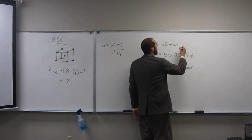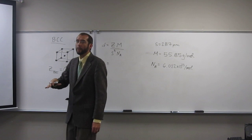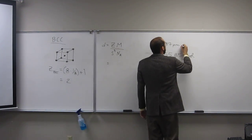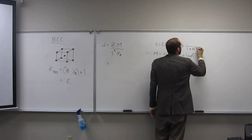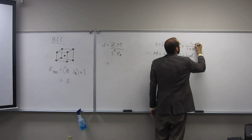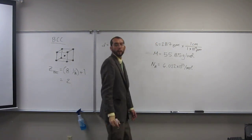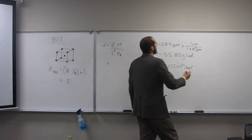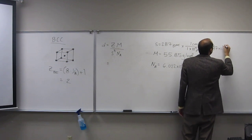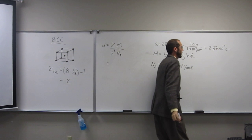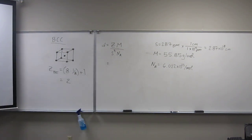So, conversion you want to get used to, because these are a lot of times from picometers to centimeters is 1 times 10 to the 10th picometers is 1 centimeter. So this is going to be 2.87 times 10 to the negative 8 centimeters. Once you do enough of these, those two numbers, negative 8, you'll see that a lot. So get used to it.